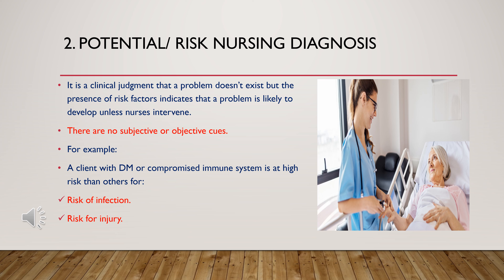For example, a patient admitted with diabetes mellitus or a patient with an immunocompromised immune system is at high risk for other problems like risk for infection or risk for injury. When a patient is admitted with a compromised immune system or diabetes, the actual problem at that time is hyperglycemia — risk for infection is the potential problem for that particular patient.